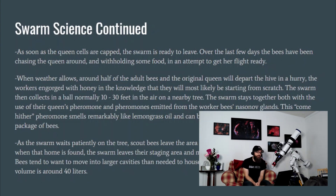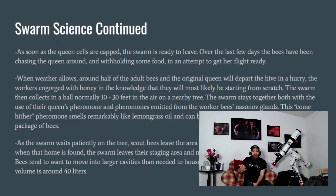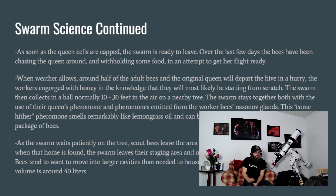As soon as those queen cells are capped, the swarm is going to leave. This is one reason why pulling capped queen cells is a bad idea — if you pull them thinking you'll prevent swarming, it doesn't work that way. They'll leave when cells are capped, and the queen may have already left, meaning you just removed the hive's viability for a new queen. Once you see capped cells, your best bet is to split — if the original swarm hasn't already departed.